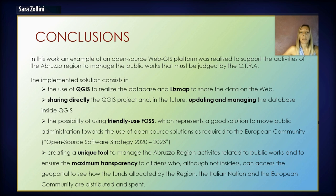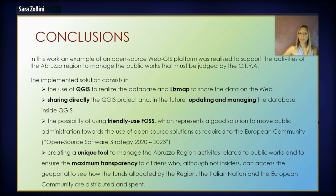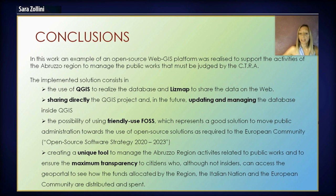To conclude, in this work an example of an open-source WebGIS platform was realized to support the activities of the Abruzzo region to manage the public works. The implemented solution consists in the use of QGIS to realize the database and LeadsMap to share the data on the web, sharing directly the QGIS project and in the future updating and managing the database inside QGIS. The possibility of using friendly FOSS represents a good solution to move public administration toward the use of open-source solutions as required by the European community, and creates a unique tool to manage Abruzzo region activities related to public works and to ensure maximum transparency to citizens.